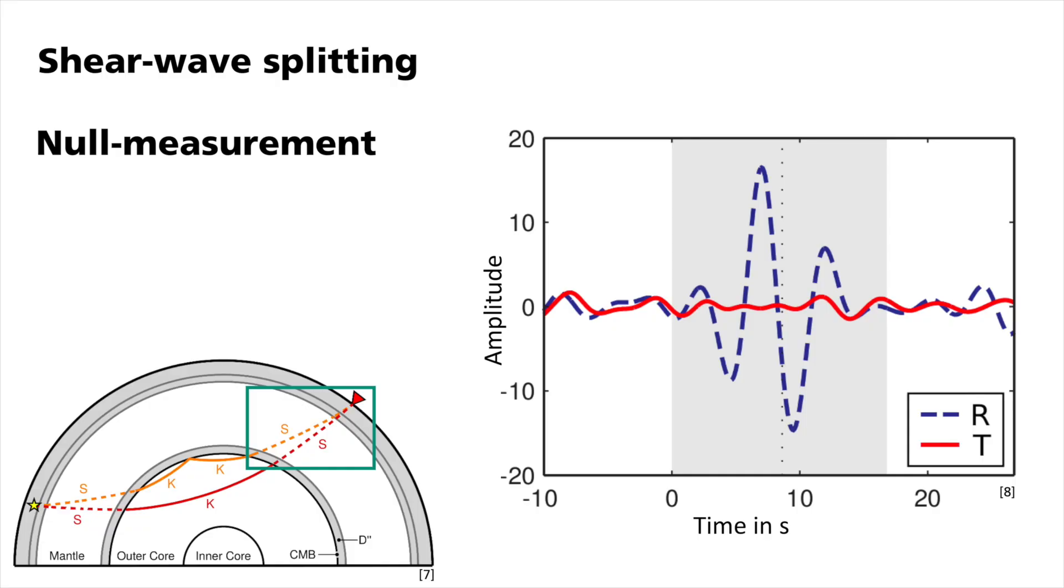In the first case, we have a clear signal on the radial R component, but almost no signal on the transverse T. This is a so-called null measurement and indicates that the recorded waveform was not split. Reasons for such observations are that the wave traveled only through isotropic material or that the polarization of the wave was parallel or perpendicular to the fast axis of the anisotropic medium.